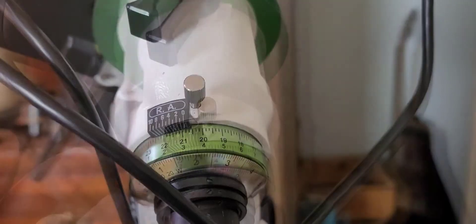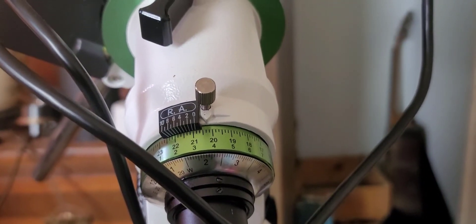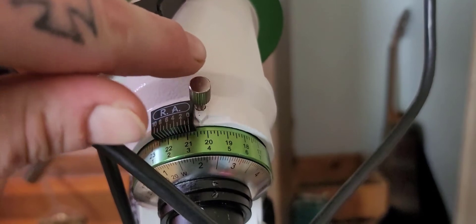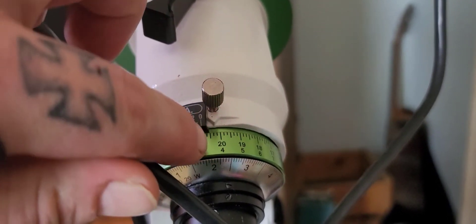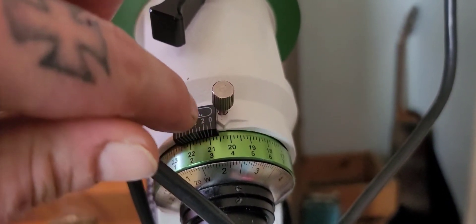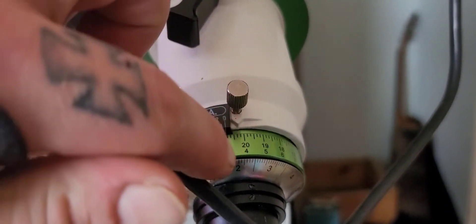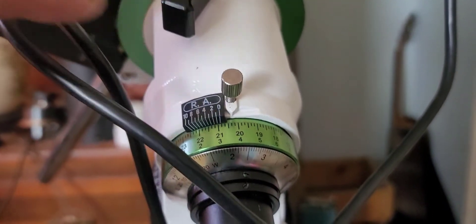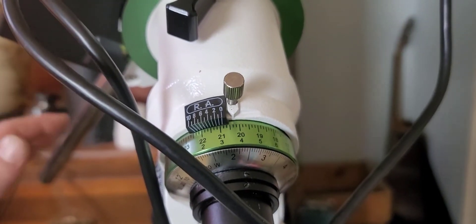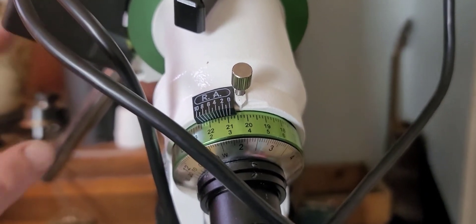Right there. Usually on the better mounts, you can lock this down and it will keep this thing from turning. But on this particular mount, for some reason, you can't lock down the dial. So what you're going to do, you're going to do this without any counterweights or any telescope on or anything, just your bar here.